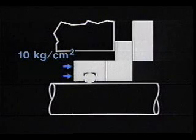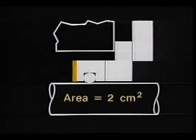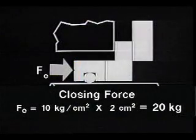For example, let us assume that we have 10 kilograms per centimeter squared of pressure in the stuffing box. This pressure is generating an axial force on the back of the rotary. This area is 2 square centimeters. Thus, the resulting closing force from this condition is 20 kilograms.